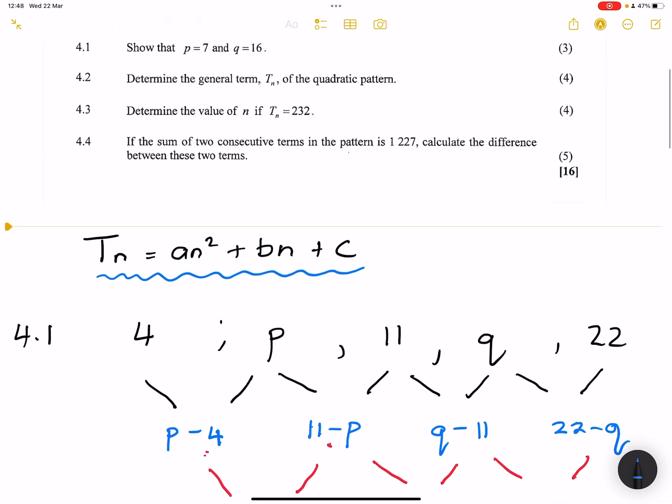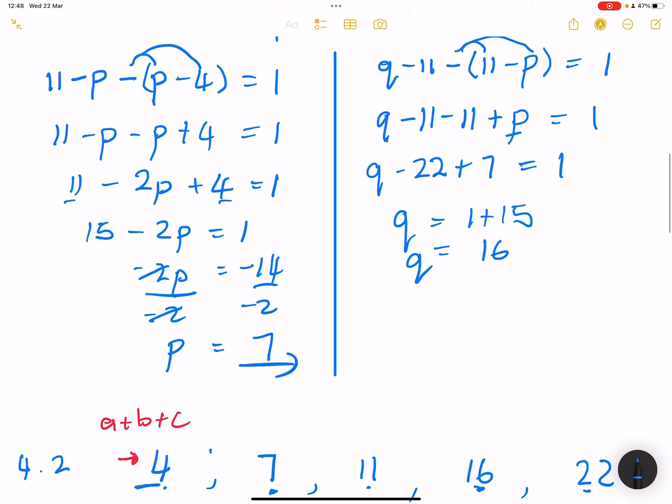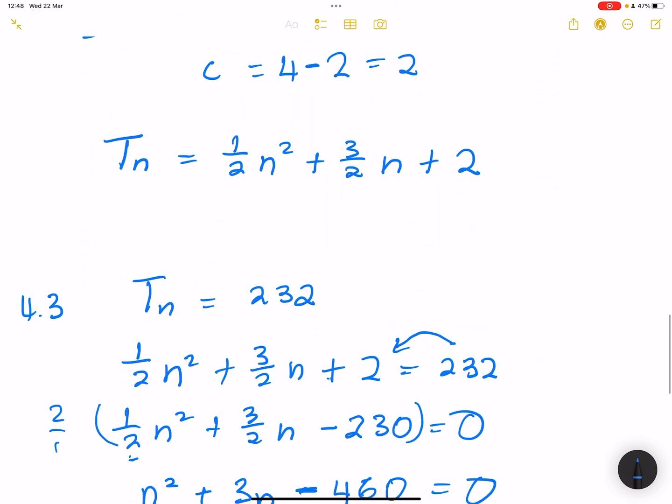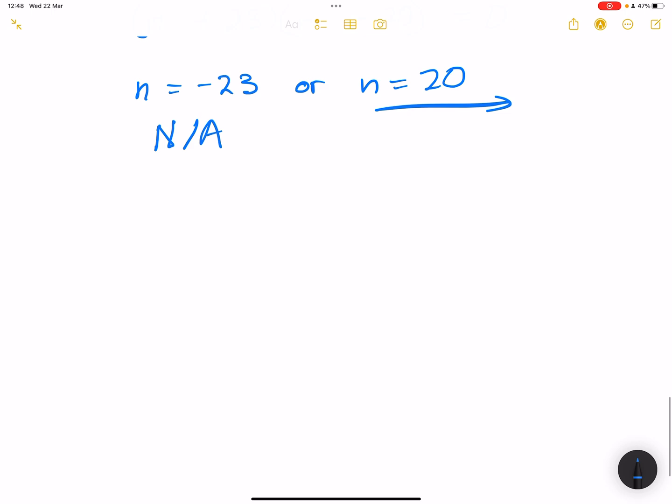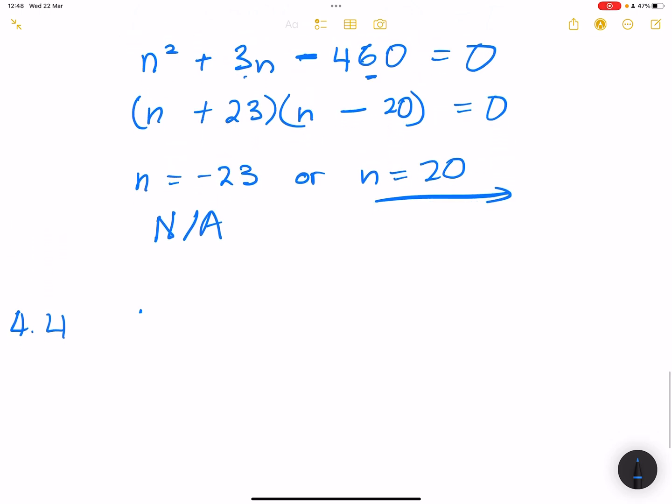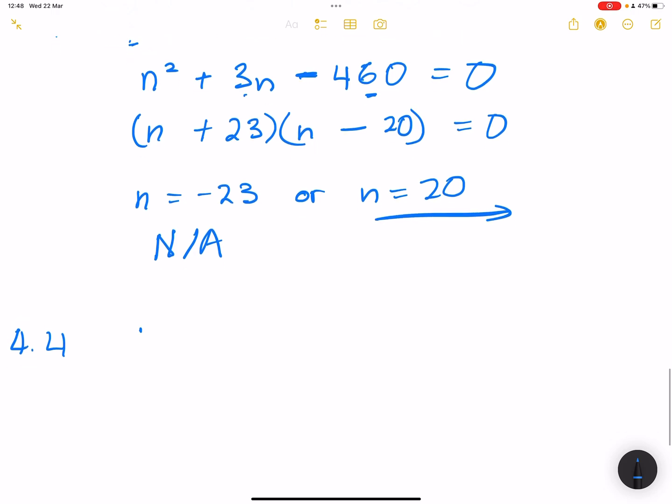Right. Now, we've already looked at these terms extensively. We found out that the value of P is 7, Q is 16. We found our quadratic sequence pattern in this case to be TN is half N squared plus three-halves N plus 2. Right. So they say if the sum of two consecutive sequences in this case is 1227, so that means I am going to take TN minus 1 plus TN. Nothing wrong with you if you said you're going to take TN plus TN plus 1 is equal to 1227.